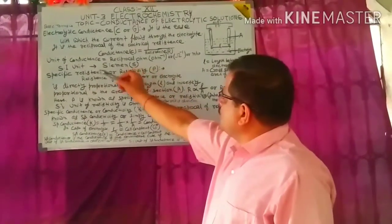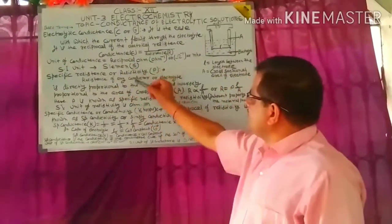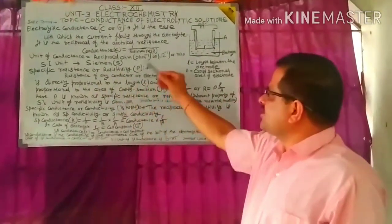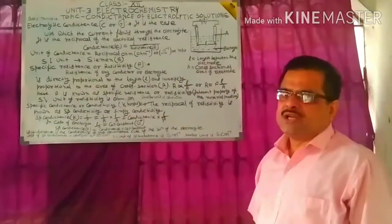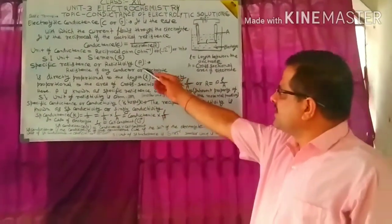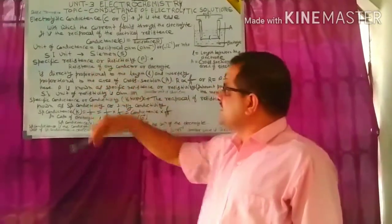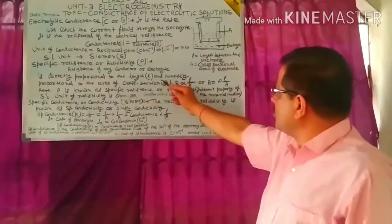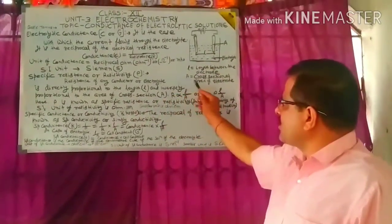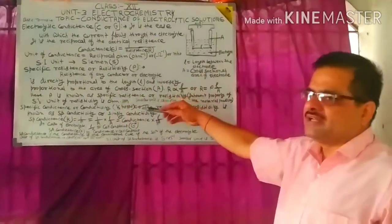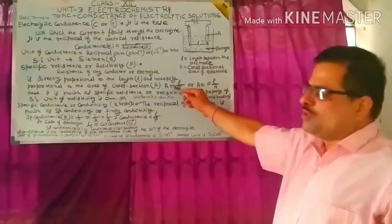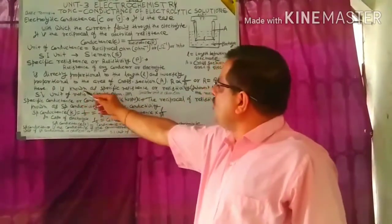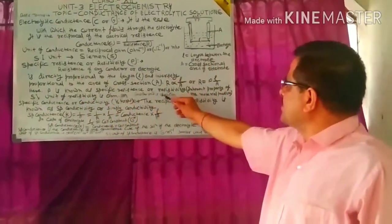Siemen (S) is the SI unit of conductance, represented by capital S. Now, specific resistance or resistivity — IUPAC recommends the term resistivity. The resistance of any conductor or electrolyte is directly proportional to its length and inversely proportional to its cross-sectional area: R = ρL/A, where ρ (rho) is known as specific resistance or resistivity.